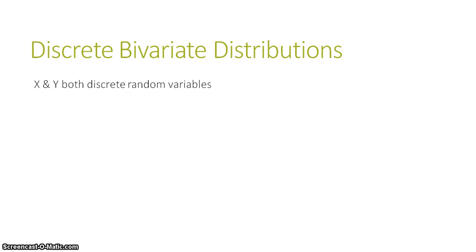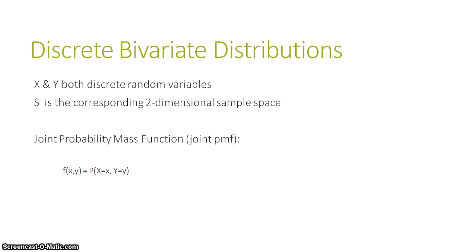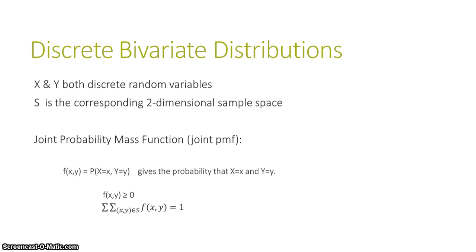Let's formally define what it means to be a discrete bivariate distribution. X and Y need to both be discrete random variables, and S is the corresponding two-dimensional sample space consisting of pairs (x, y). The joint probability mass function, also called the joint PMF, uses the notation f(x, y) and tells us the probability that X takes on the value little x and Y takes on the specific value little y. It is a probability mass function, so all of the probabilities need to be greater than or equal to zero, and if we take all of the probabilities for the entire two-dimensional sample space and add them together, they need to sum to 1.